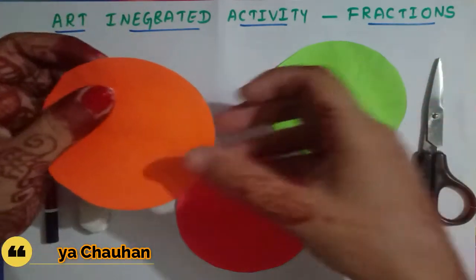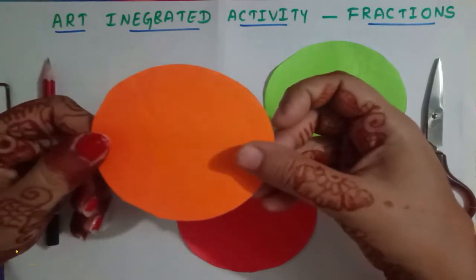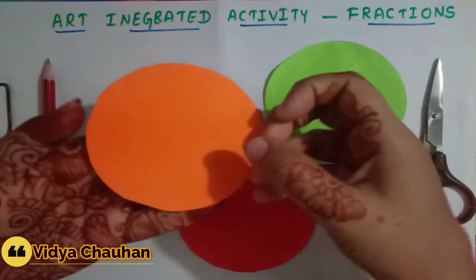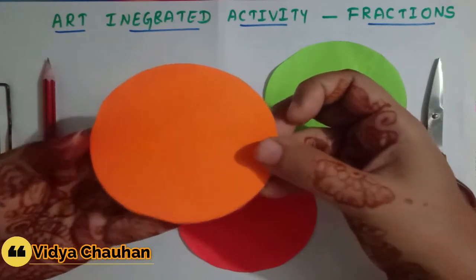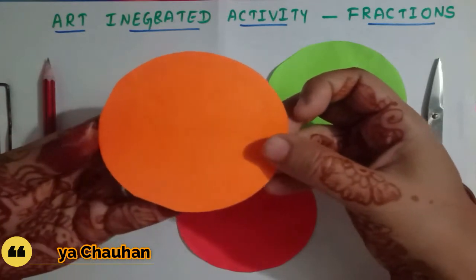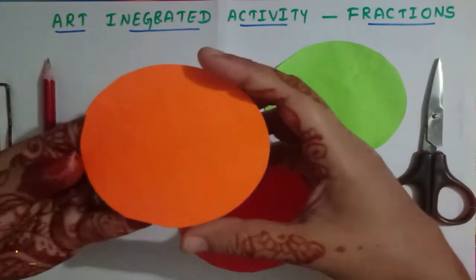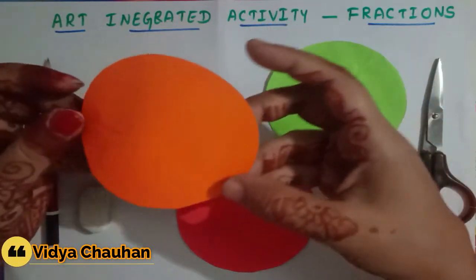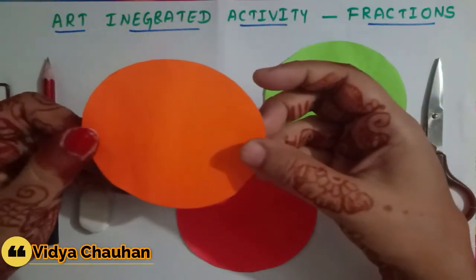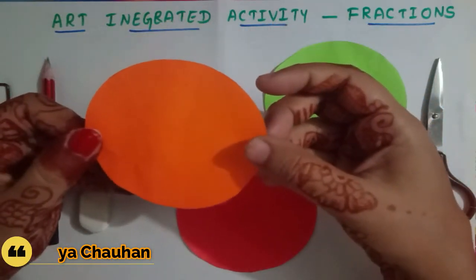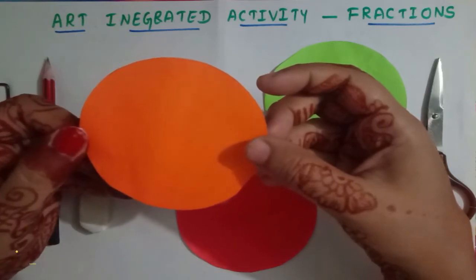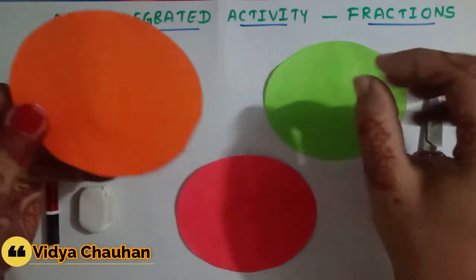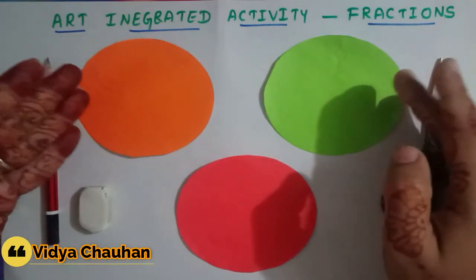Let me give you a brief introduction to fractions. What shape are you looking at here? You will say it is a circle, but in terms of fractions, this complete figure is called a whole.